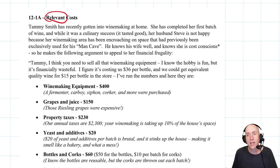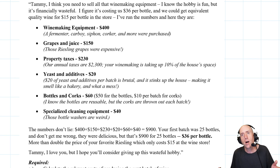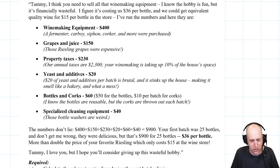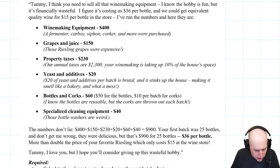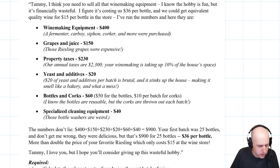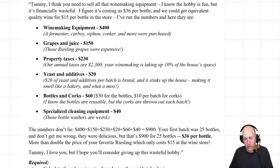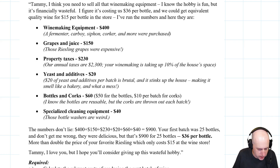Steve says: "Tammy, I think you need to sell all that winemaking equipment. I know the hobby is fun, but it's financially wasteful. I figure it's costing us $36 per bottle and we could get equivalent quality wine for $15 per bottle in the store. I've run the numbers and here they are." So he's trying to appeal to her financial side. He's presented a list of costs including winemaking equipment at $400 — a fermenter, carboy, siphon, corker, and more were purchased. Grapes and juice, $150. Property taxes, $230 — their annual taxes are $2,300, and winemaking is taking up 10% of the house's space, so $2,300 times 10% is $230.